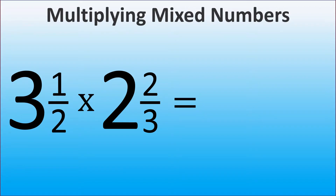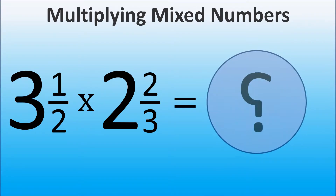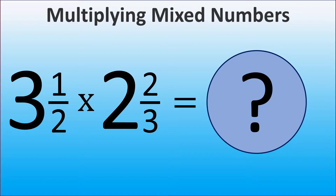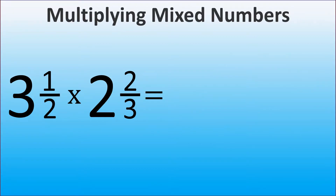How do we multiply a mixed number by a mixed number? Here we have two mixed numbers. Let's see how we can multiply them. First, we represent each mixed number as an improper fraction.